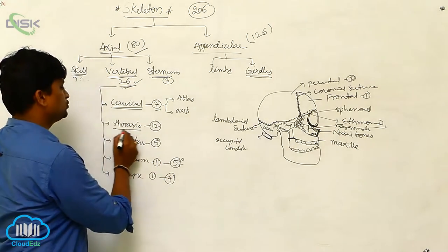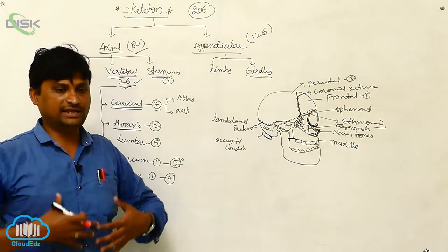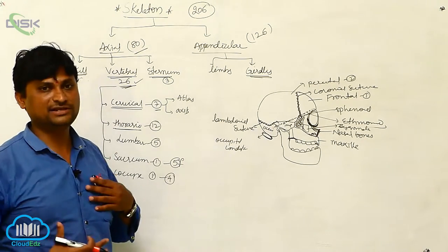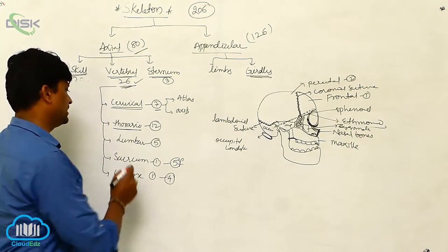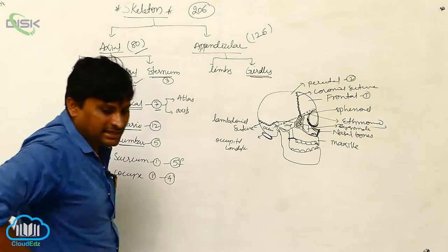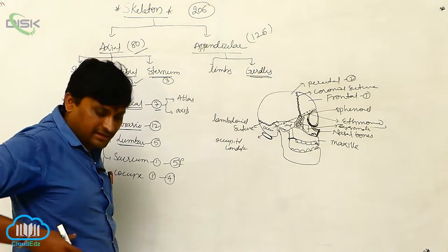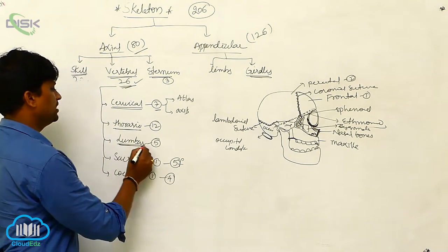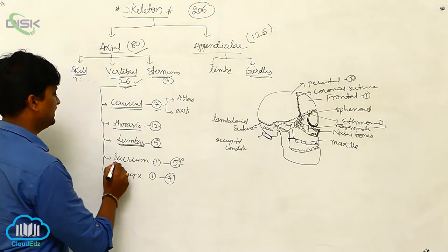The second type is the thoracic vertebra, located in the thoracic area forming the rib cage. Next is the lumbar vertebra, found at the back of the body in the lumbar area. There are five lumbar vertebrae.